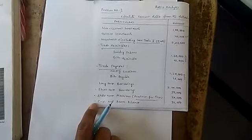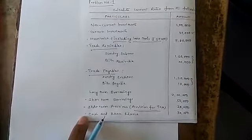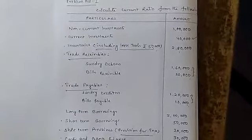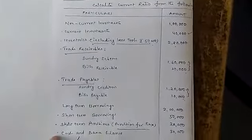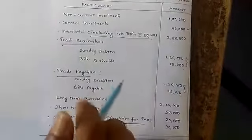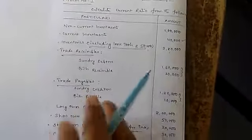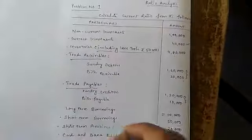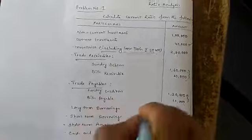The current ratio formula is: current assets divided by current liabilities. In our previous sessions we discussed current assets and current liabilities in detail. Using this data, we have to find out the current ratio. First, we need to identify which items are current assets, non-current assets, current liabilities, and non-current liabilities.